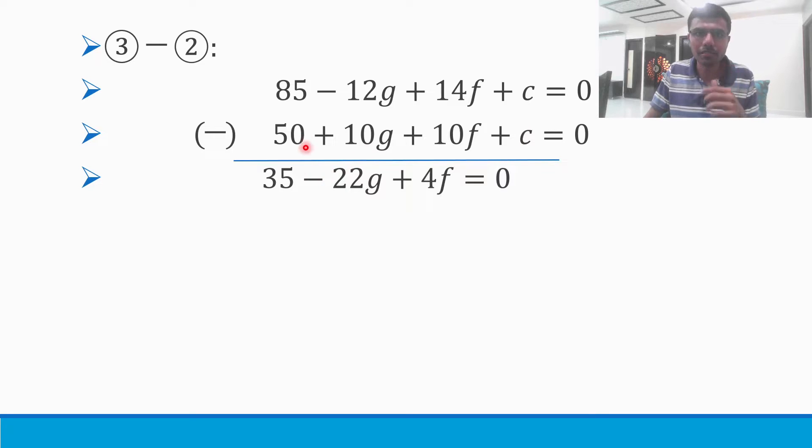So ultimately I get 35 - 22g + 4f = 0. Better to write things in a decent way like g, f, constant form. So I'd get -22g + 4f + 35 = 0. This is equation 5.